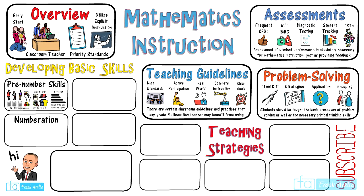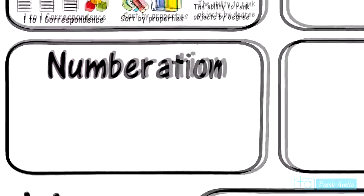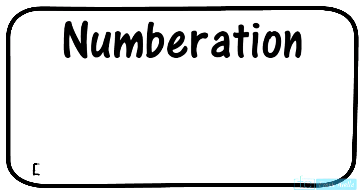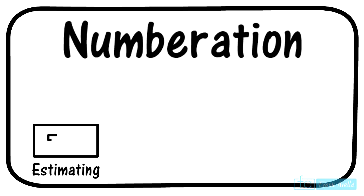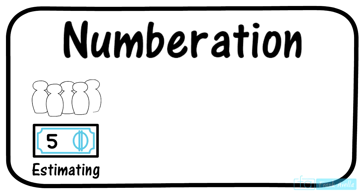Next we'll take a look at numeration, which relates to the process of counting. Students should be skilled at estimating numbers. For example, what is the price of a cheeseburger or a gallon of milk? Teachers can ask students to estimate how many other students are currently in the classroom.